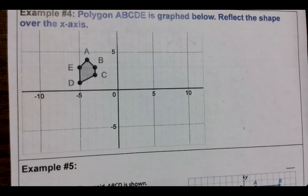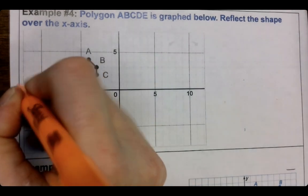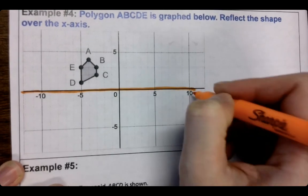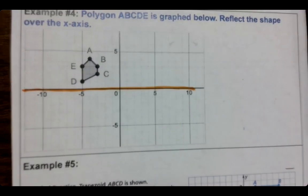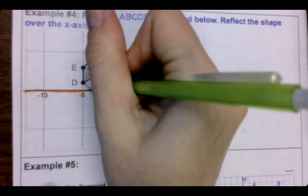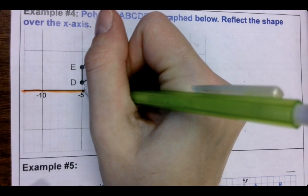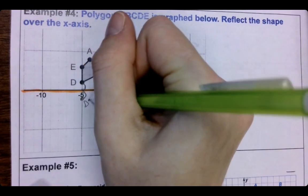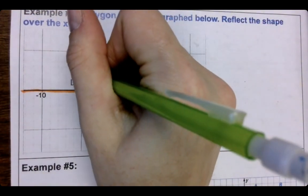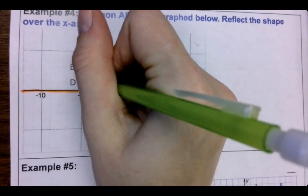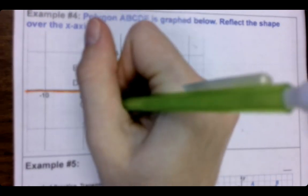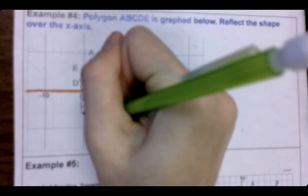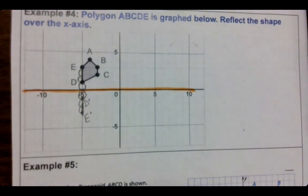So we're going to graph this over the x-axis. Is x left to right or up and down? Left to right. So I'm going to highlight it because I just want to make sure that we have that piece. And then we will start our counting. So I'm going to start with D. How many is D away from the x-axis? One. So I would go one on the opposite side of that orange line, and that would be my D prime. E is one, two, three away from the x-axis. So one, two, three. That is my E prime. So notice how the two dots are two away here, they're two away here. That's a good starting place.